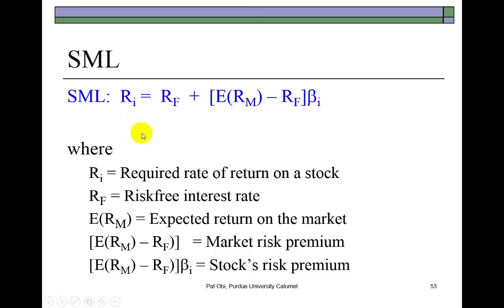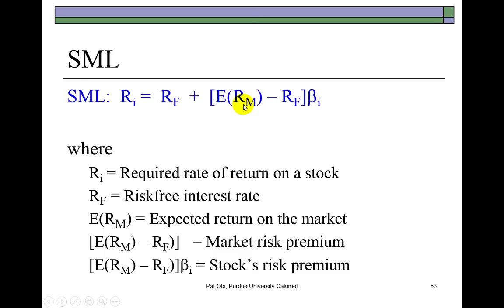Specifically, it shows that the required rate of return on a stock held in a diversified portfolio is equal to the risk-free interest rate plus a risk premium to compensate for the systematic risk of that stock. The stock's risk premium is equal to the product of the risk premium of the market — this term in brackets — multiplied by the beta of the stock. The term in brackets is the difference between the expected return on the market and the risk-free interest rate.